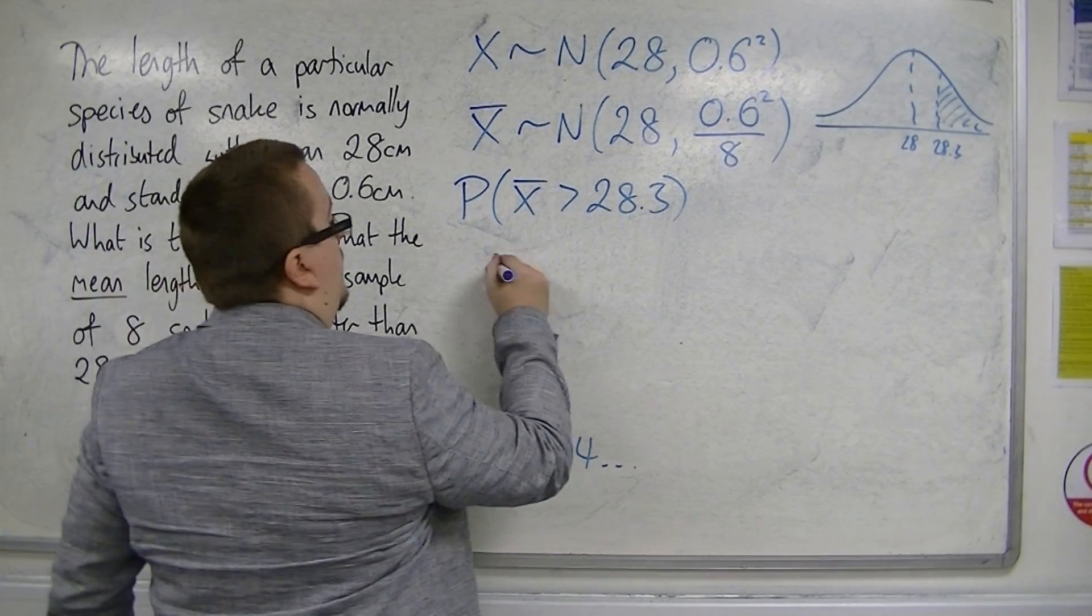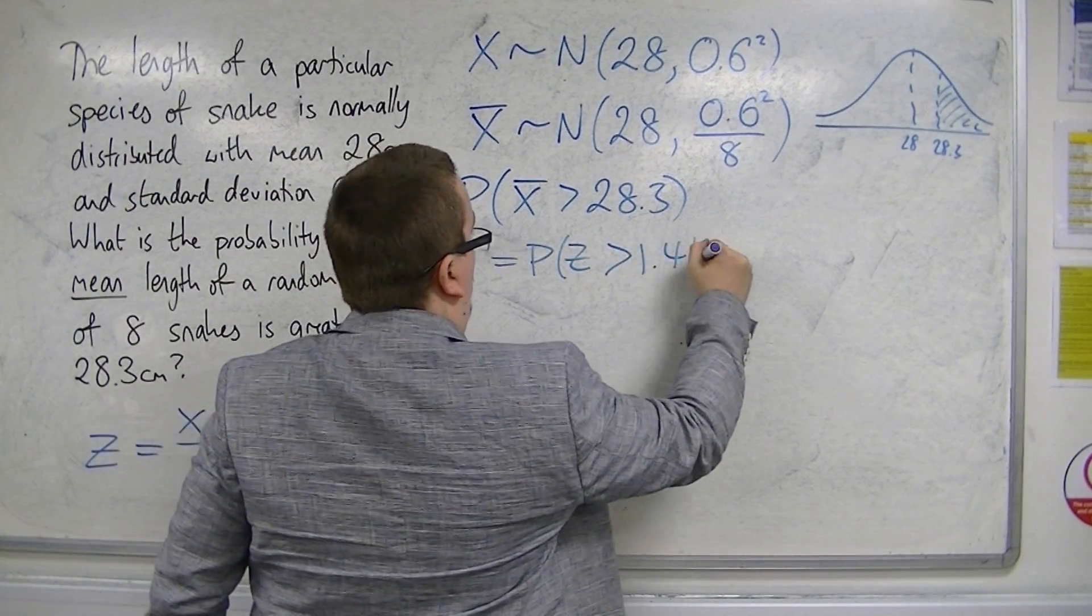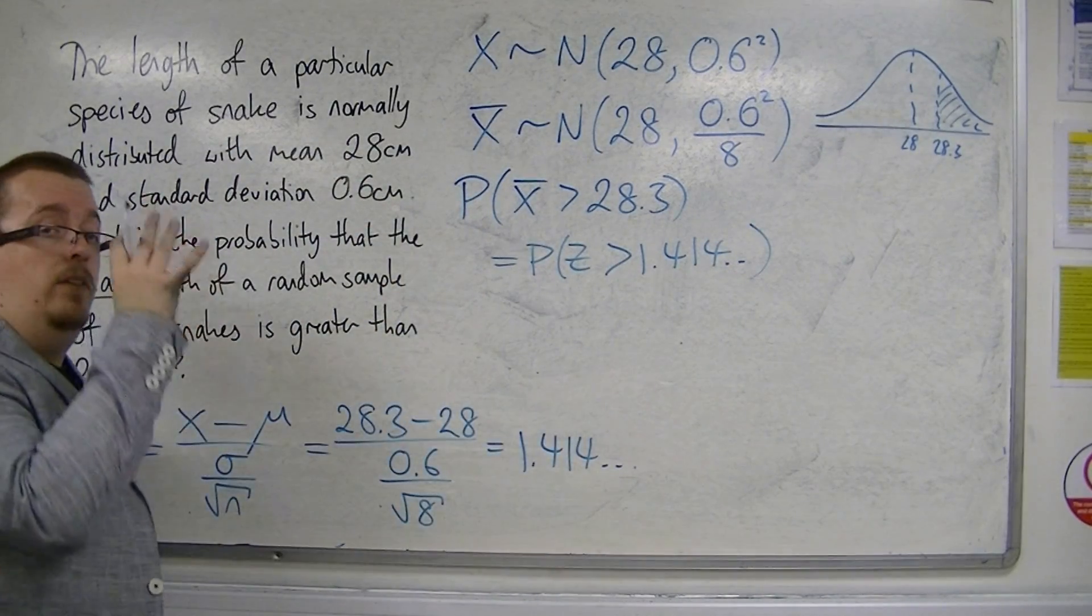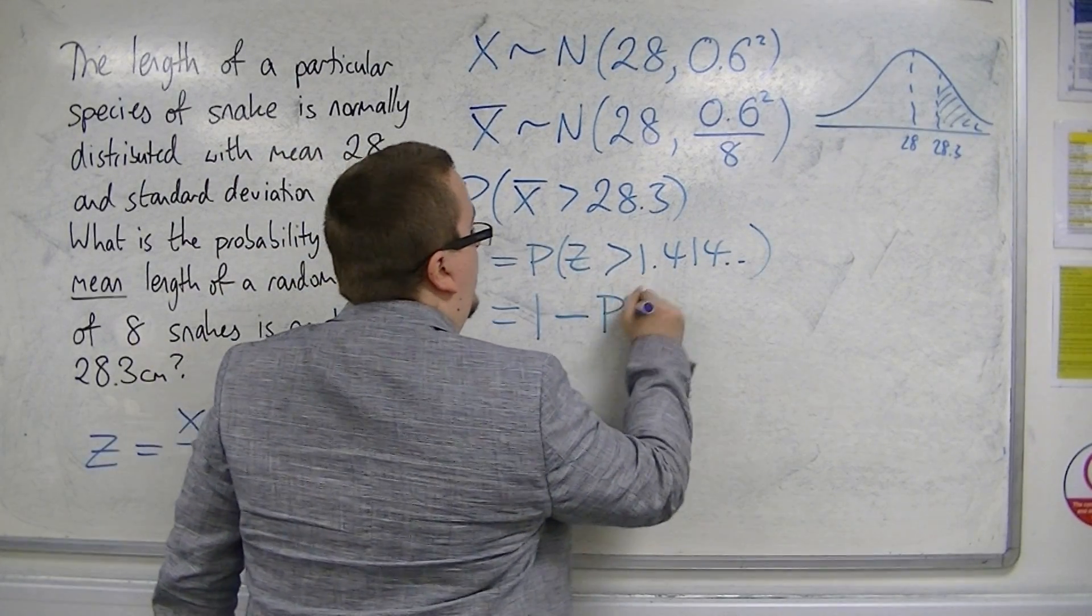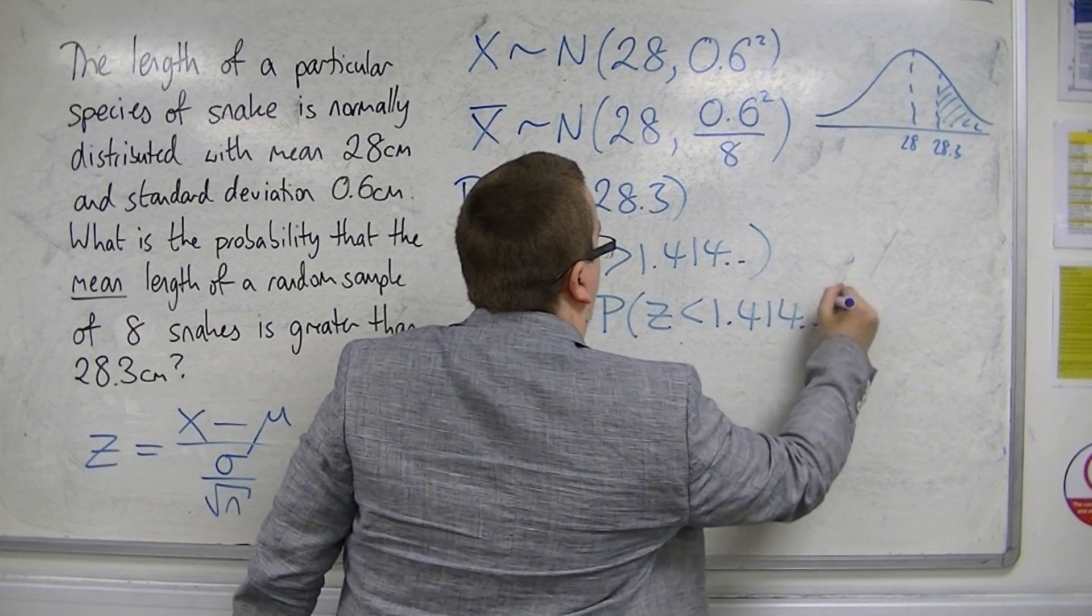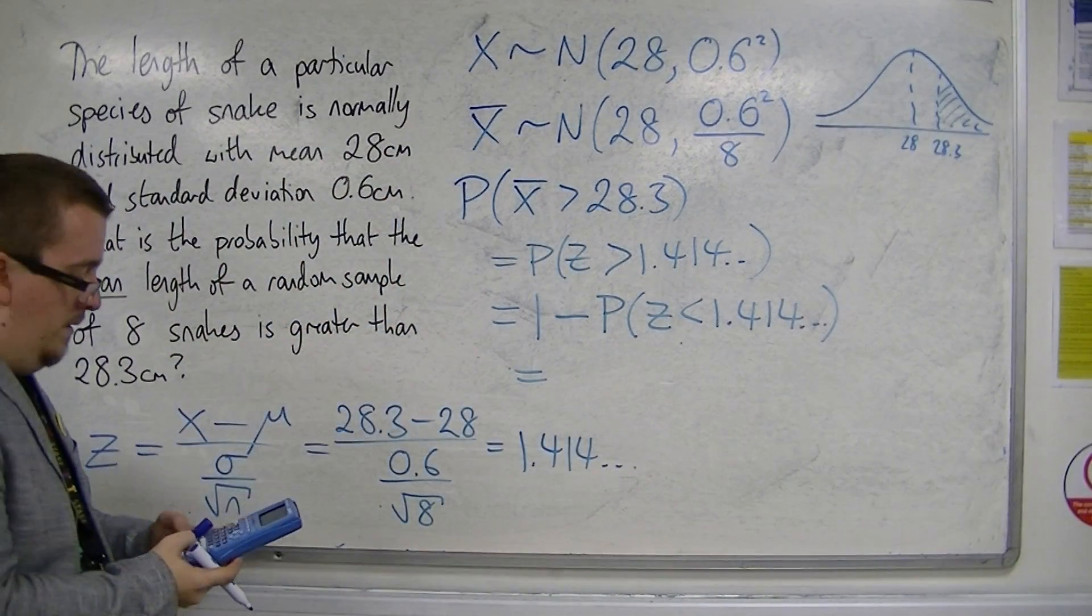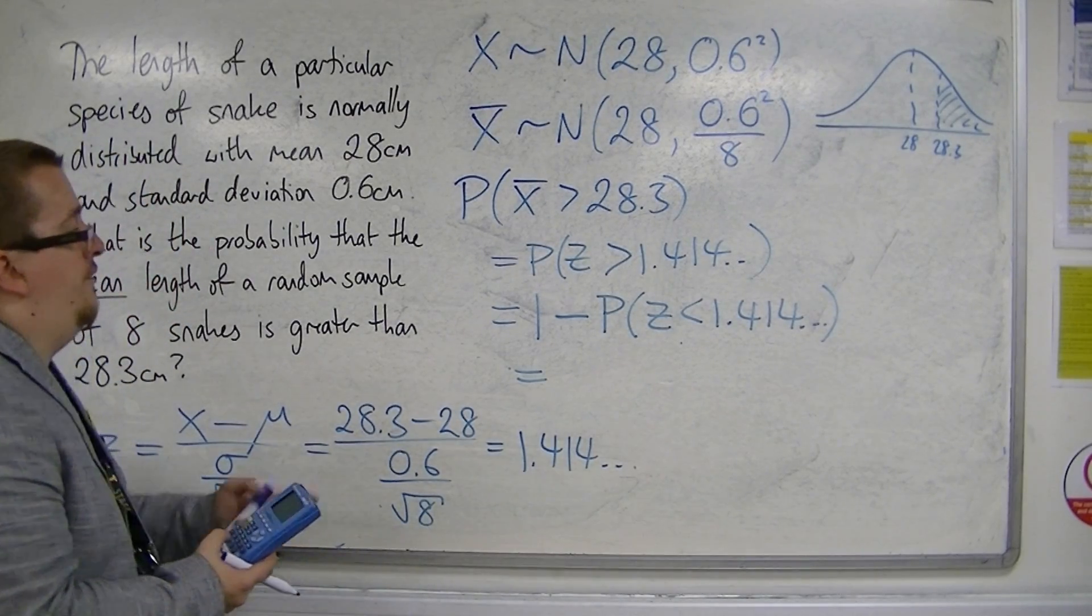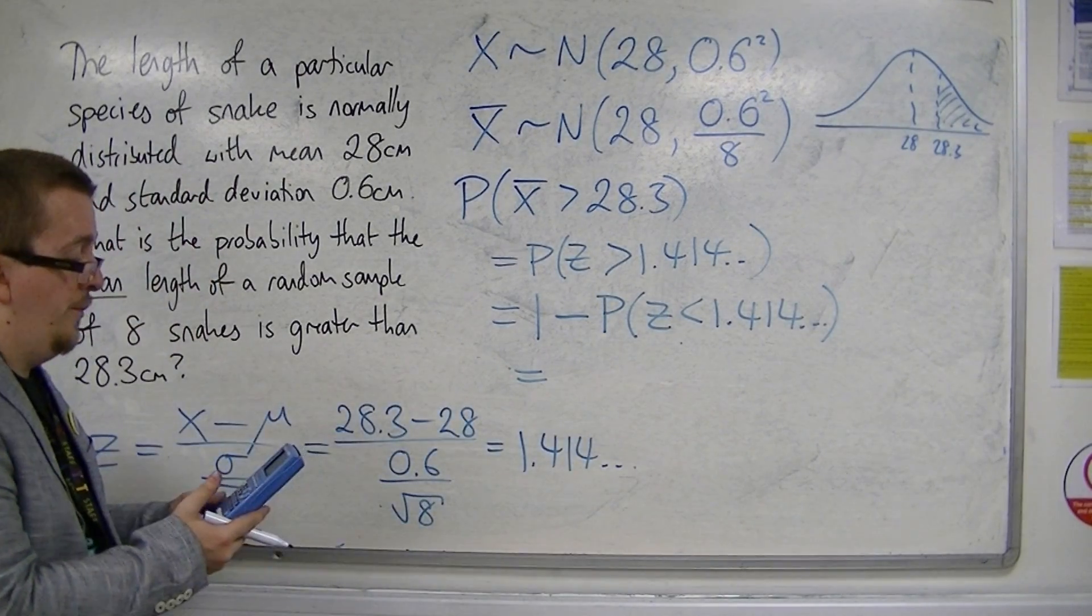So we're looking at the probability that z is greater than 1.414. To calculate that, we subtract the probability of z being less than 1.414 from 1. So 1 take away the normal CDF using the TI-82 stat, or you can go straight to the tables if you prefer.